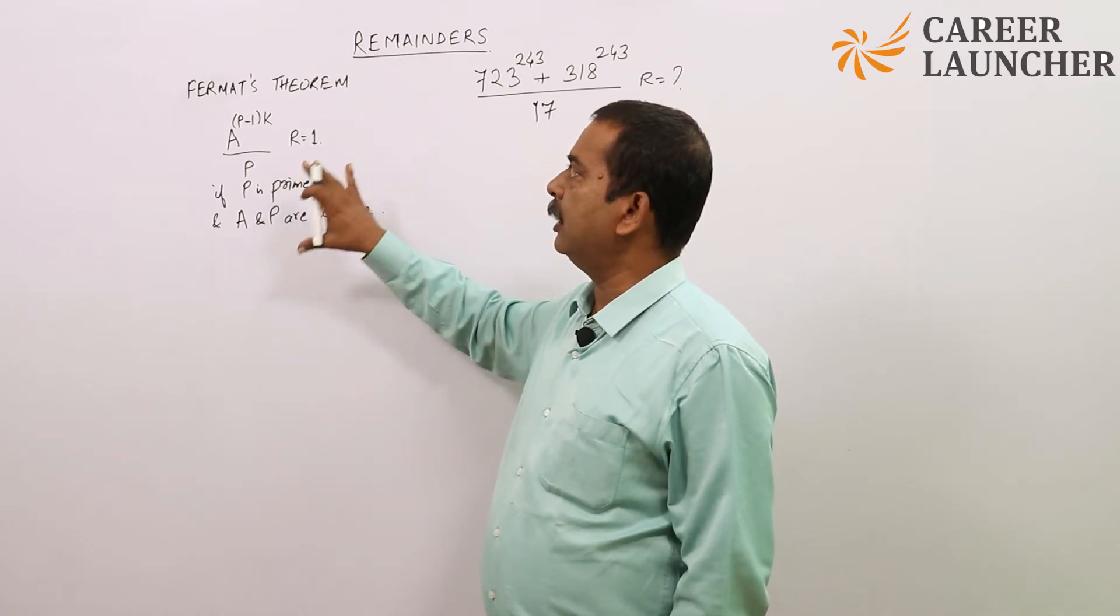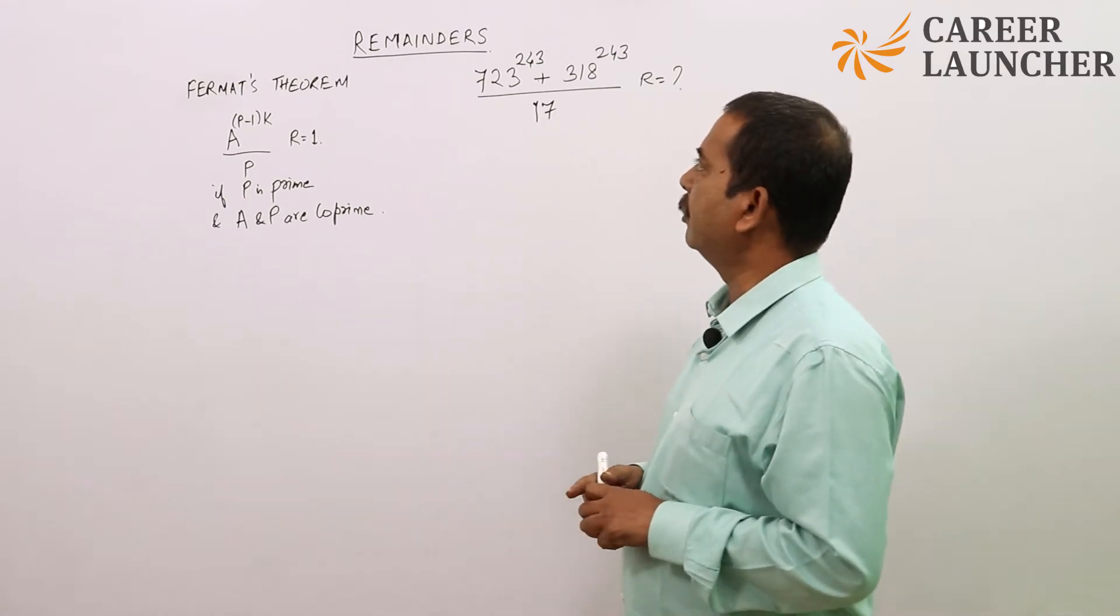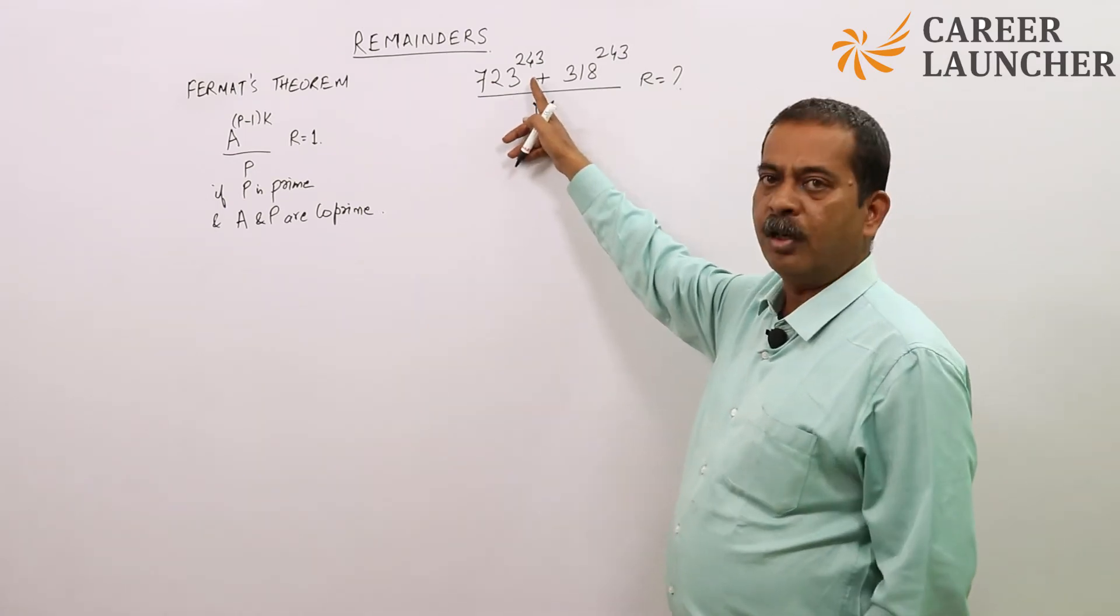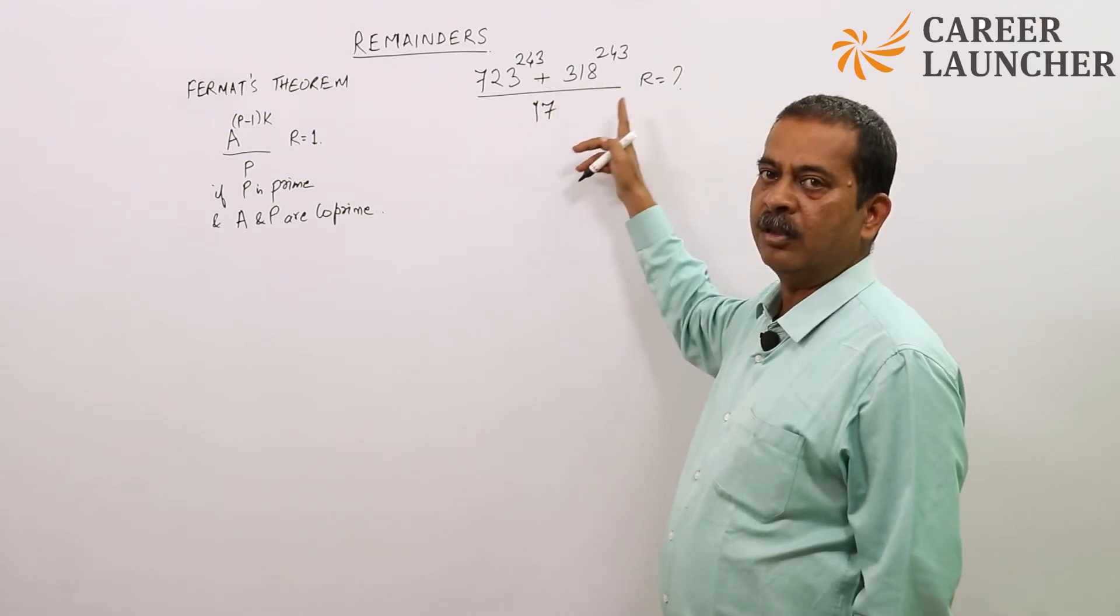If I have to apply this and reduce the question into a very simple form, let us see an example. It says 723 to the power 243 plus 318 to the power 243 divided by 17, what is the remainder?